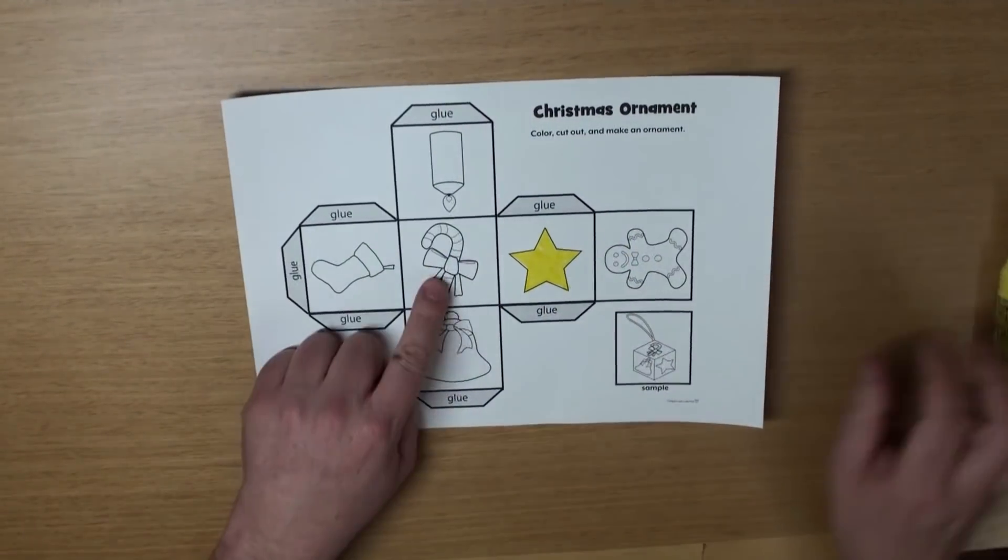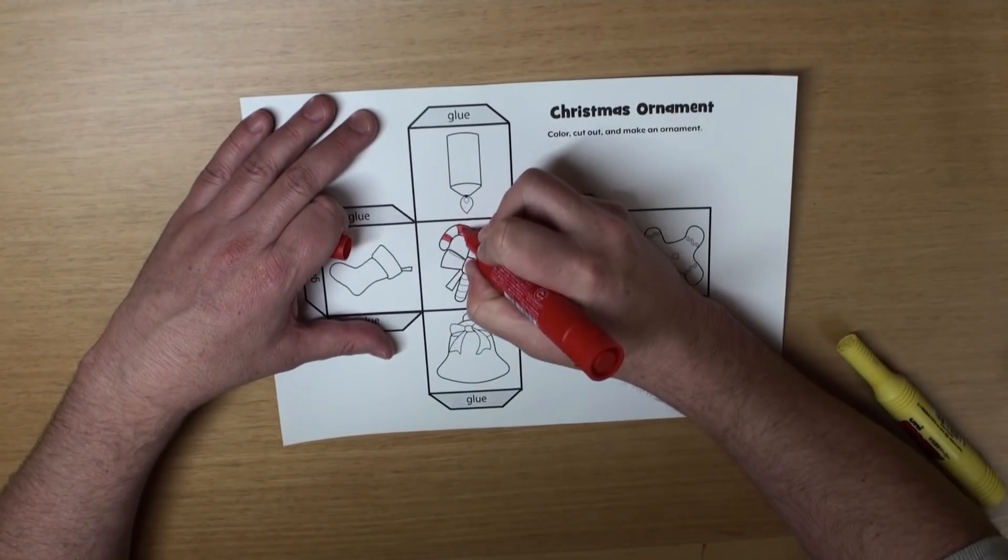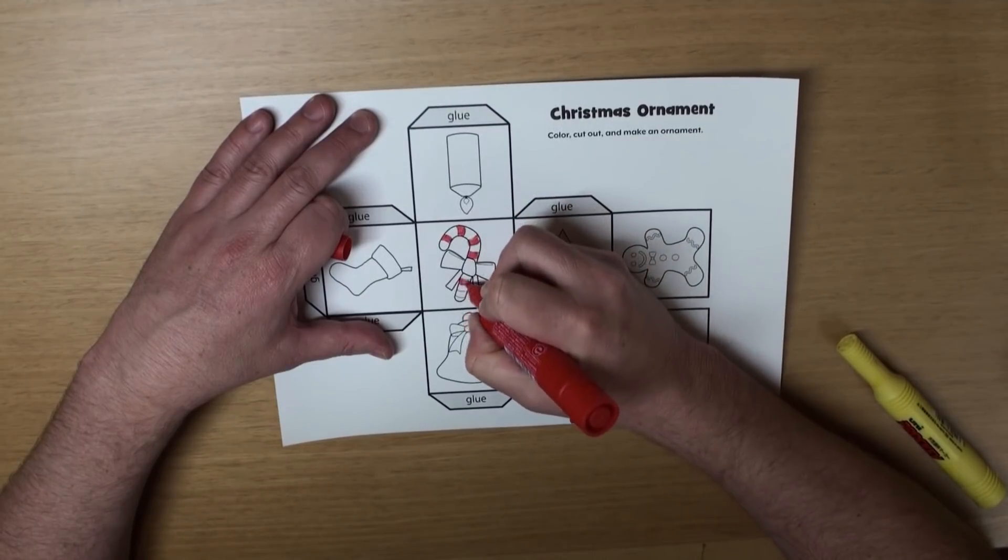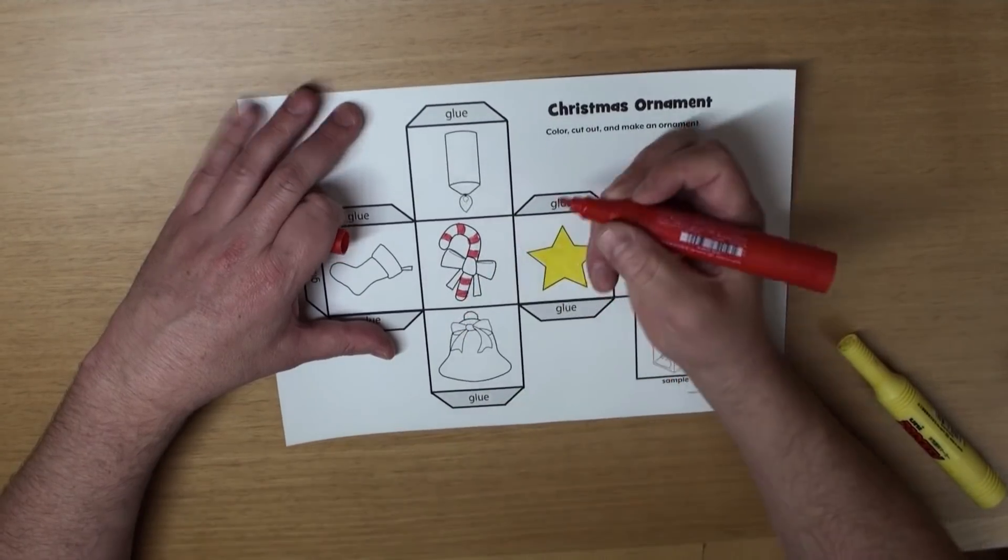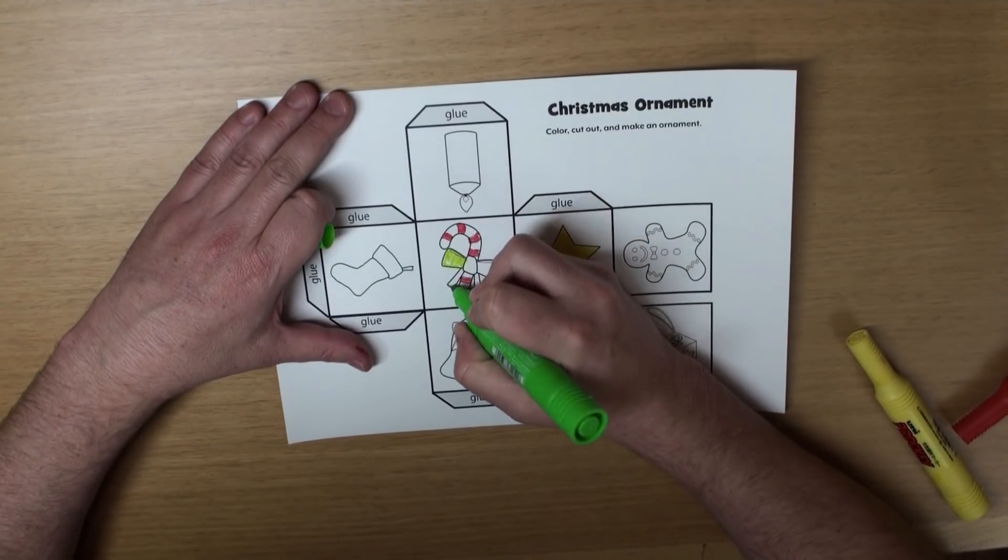Hmm, what's this? That's right, it's a candy cane. And candy canes are red and white. And yummy! Yeah! And I'll color the ribbon light green.